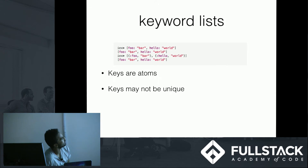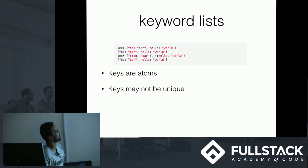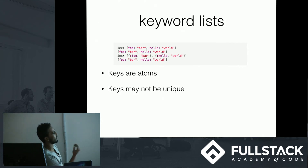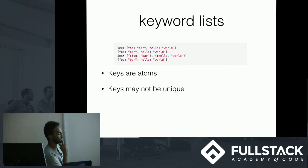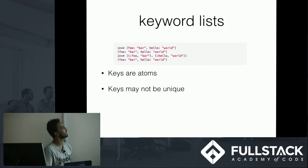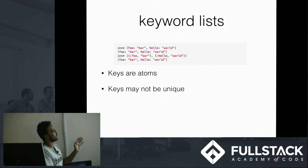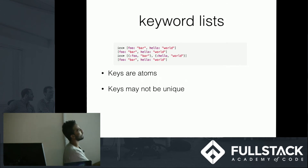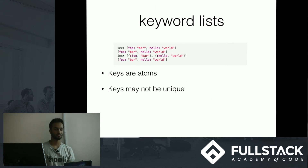A keyword list is a list of two-element tuples where the first element in each tuple is an atom. The unique thing about keyword lists is that the keys may not be unique. They're usually used for things like query clauses — for example, if you're using Ecto, the database wrapper for Elixir, you could have a where clause with multiple conditions like where name is 'bar' and where age is 16.